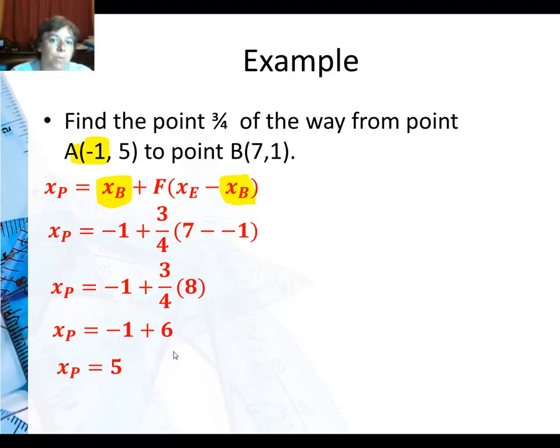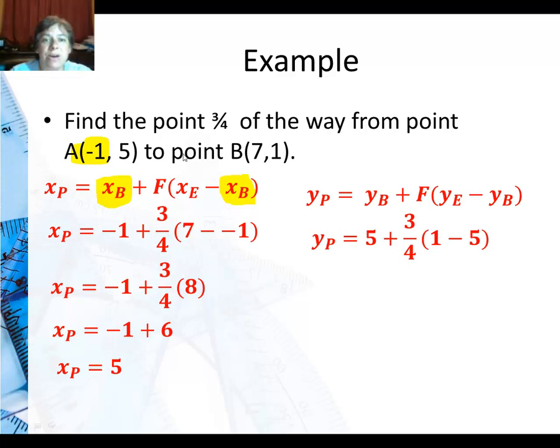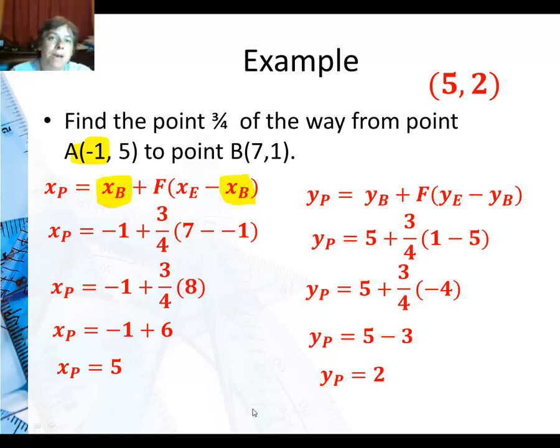I still have to go find the y coordinate. Same formula. Now I'm just going to use the beginning point for y is five. So you can see the five is here and here. The ending point for y is one. So there it is. And my fraction did not change. It's three-fourths. So one minus five is negative four. Go ahead and multiply that out and I'm going to get five minus three or two. So my coordinates are five comma two.